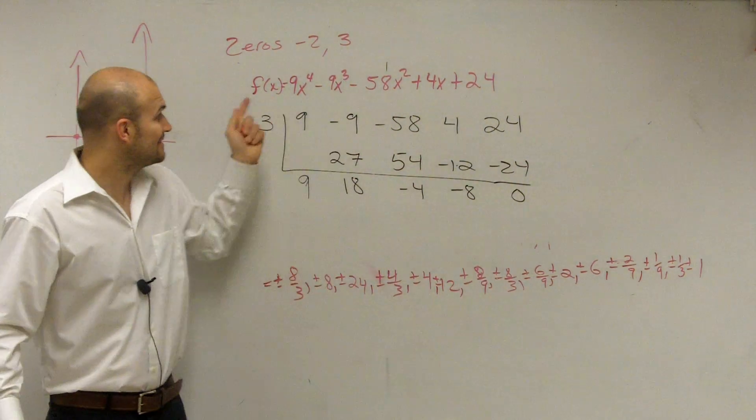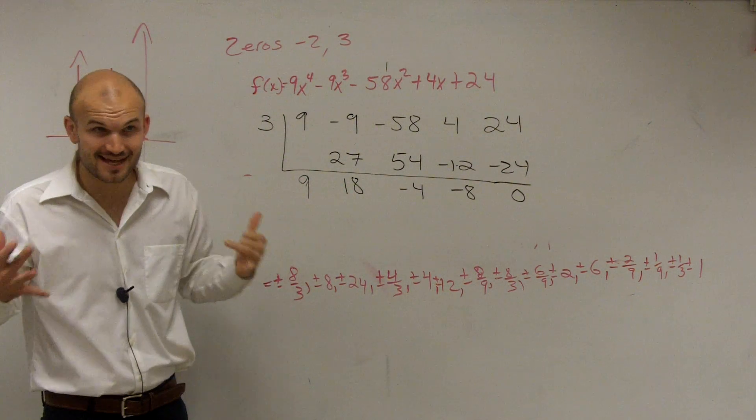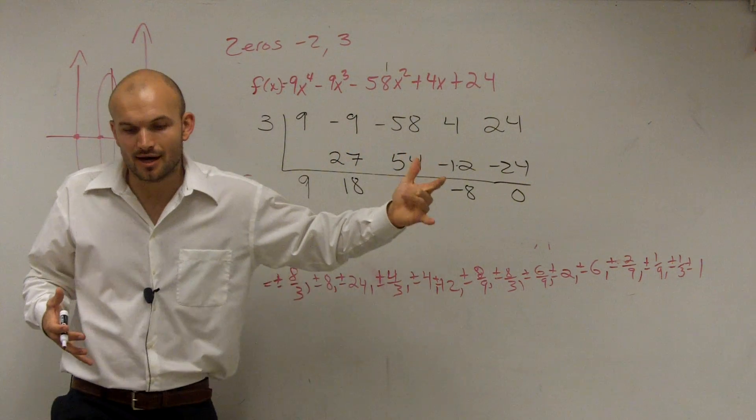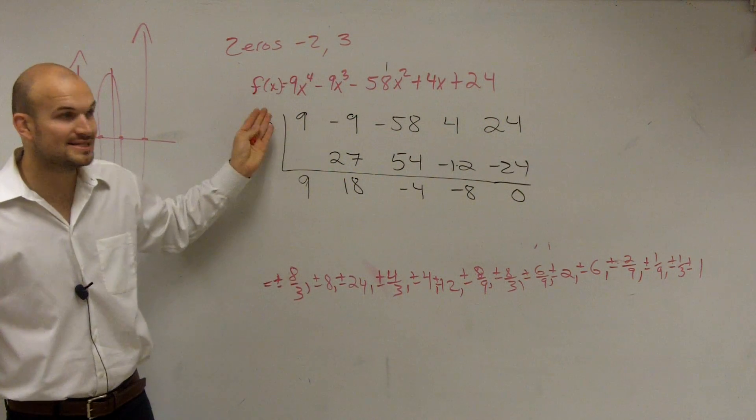So when we have a remainder of 0, that tells us what? That's a zero. And x minus 3 then is a factor, right?